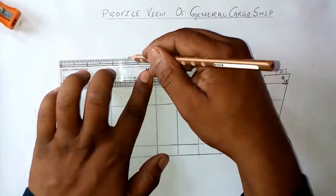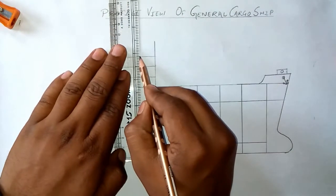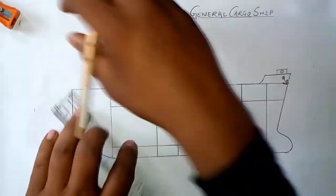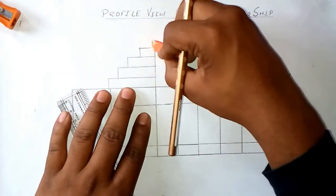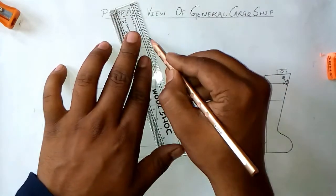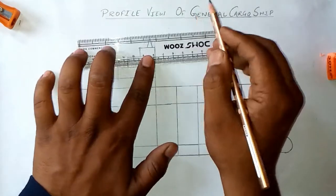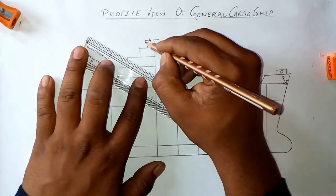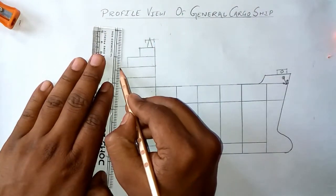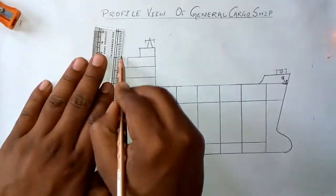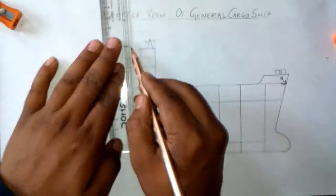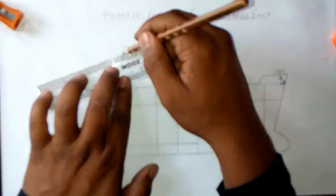These are the accommodations. The topmost is the wheelhouse or navigational bridge. We have a radar antenna, and here is the funnel of the ship.